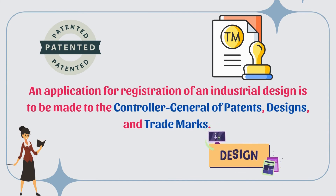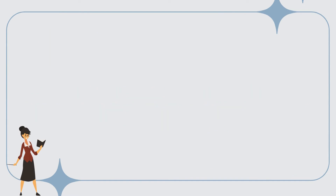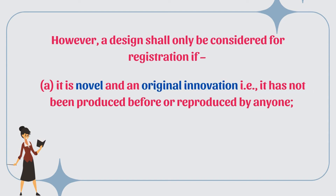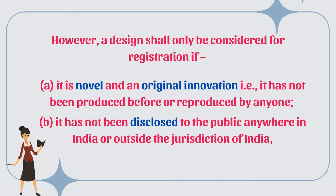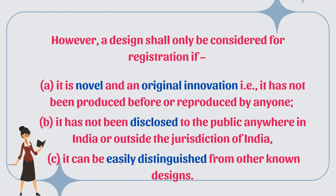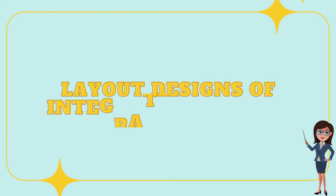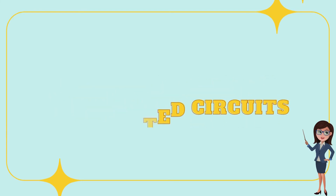An application for registration of an industrial design is to be made to the Controller General of Patents, Designs and Trademarks. A design shall only be considered for registration if it is novel and an original innovation — that is, it has not been produced before or reproduced by anyone, it has not been disclosed to the public anywhere in India or outside the jurisdiction of India, and it can be easily distinguished from other known designs. Once a design is registered, the registered proprietor is afforded protection for an initial period of 10 years.